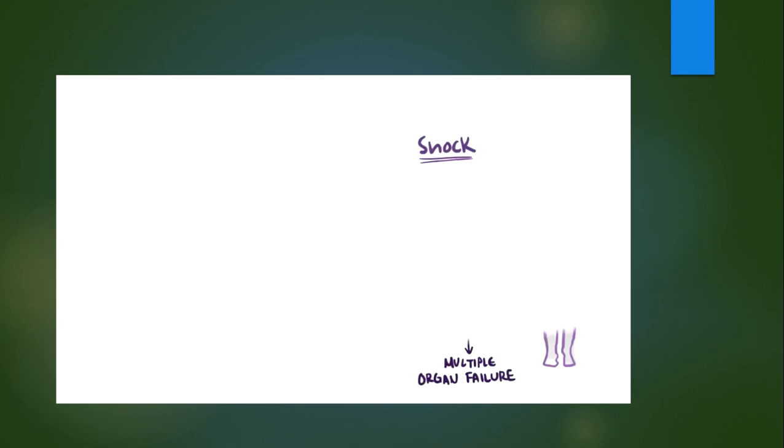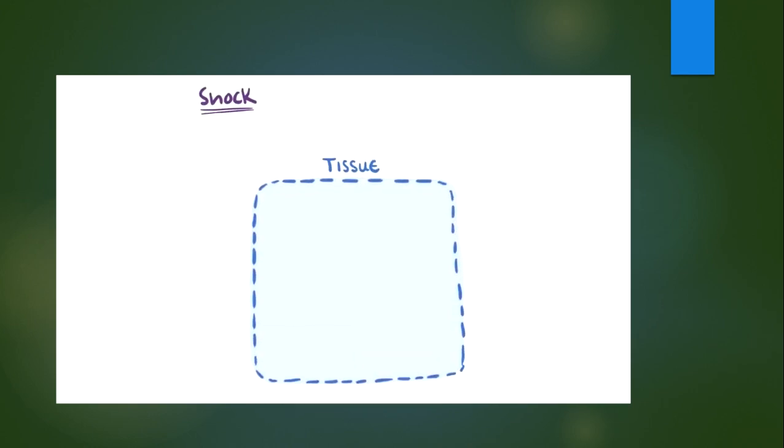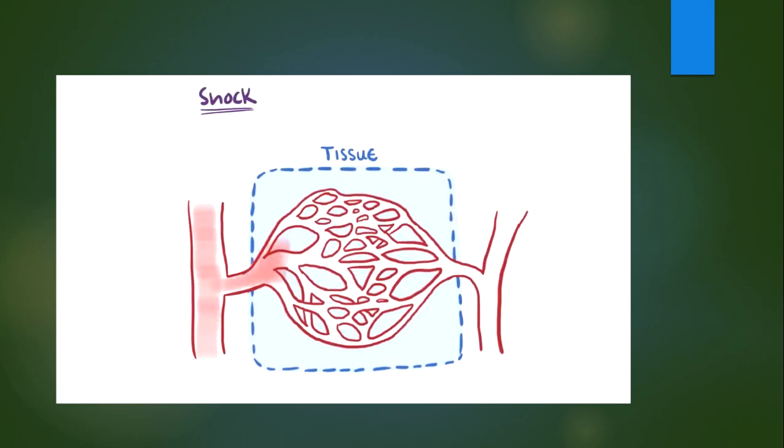With shock, the body's tissues aren't getting enough oxygen via the blood. Normally blood perfuses through tissue and delivers oxygen because there's enough pressure in the circulatory system to push it through. So blood pressure is a major determinant for the amount of blood perfusing through tissues.